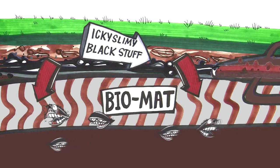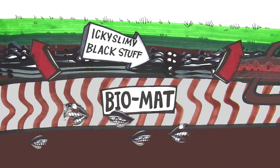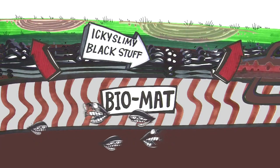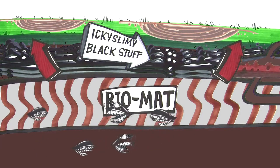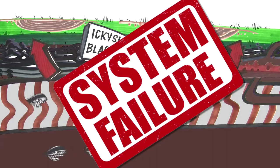Problem is, after a while, there's too much black, slimy stuff. The biomat grows thicker. Too thick, it clogs, and your system fails.